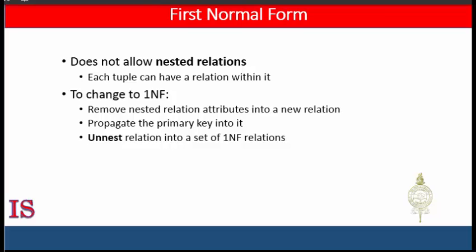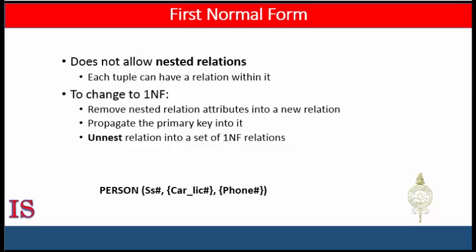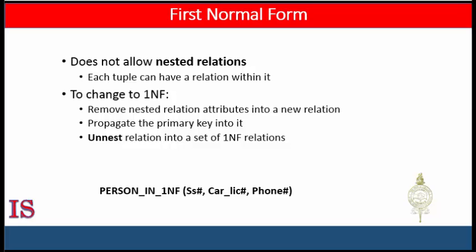The existence of more than one multi-valued attribute in one relation must be handled carefully. For example, consider the non-first-normal-form relation: Person(SS_No, {Car_License_Number}, {Phone_Number}). This represents that a person can have multiple cars and multiple phones. If strategy two were followed, it would result in an all-key relation: Person in first normal form would have SS_No, Car_License_Number, and Phone_Number, with all three attributes forming the primary key.